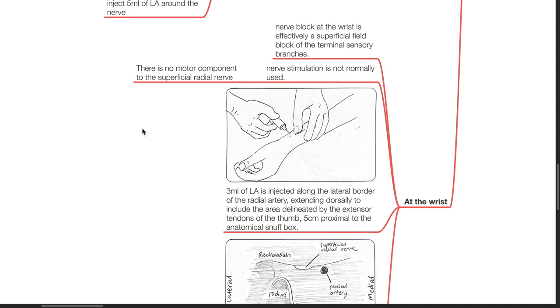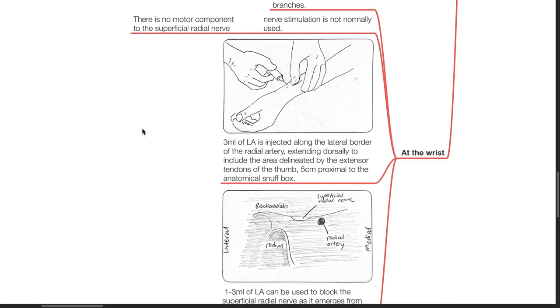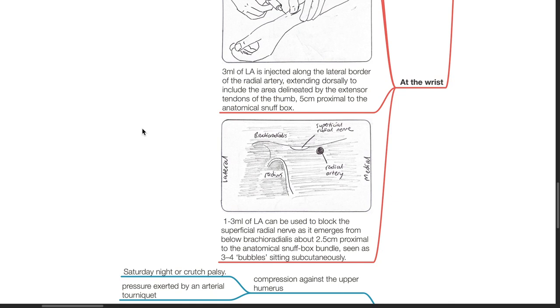At the level of the wrist, nerve block at the wrist is effectively a superficial field block of the terminal sensory branches. Nerve stimulation is not used as there is no motor component to the superficial radial nerve. 3 mL of local anesthetic is injected along the lateral border of the radial artery, extending dorsally to include the area delineated by the extensor tendons of the thumb, 5 cm proximal to the anatomical snuffbox. 1 to 3 mL of local anesthetic can be used to block the superficial radial nerve as it emerges from below the brachioradialis about 2.5 cm proximal to the anatomical snuffbox as 3 to 4 bubbles sitting subcutaneously.